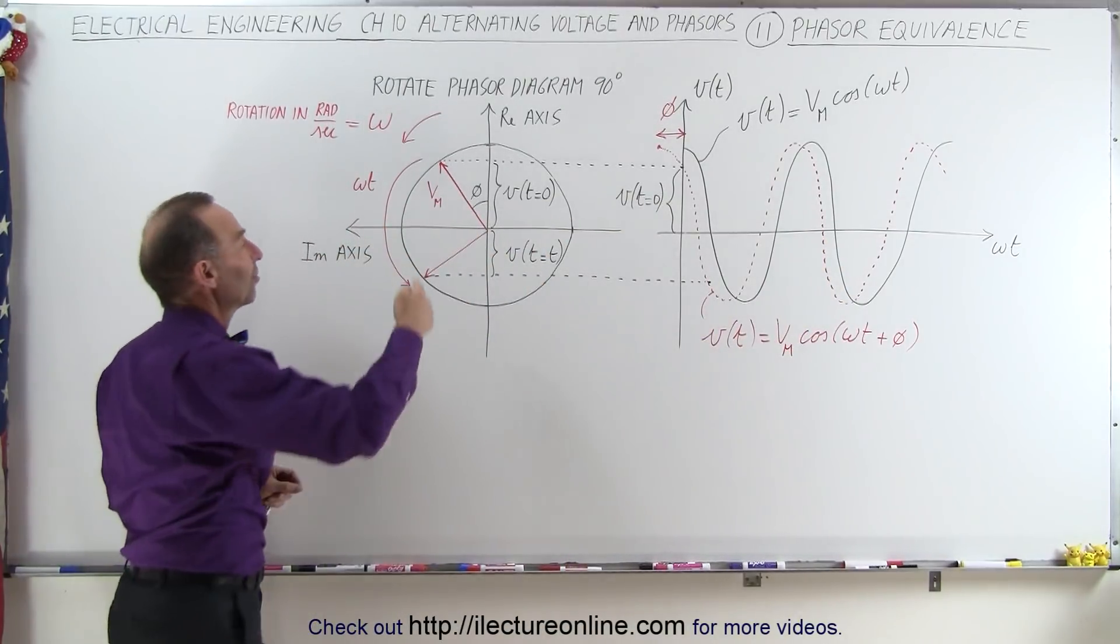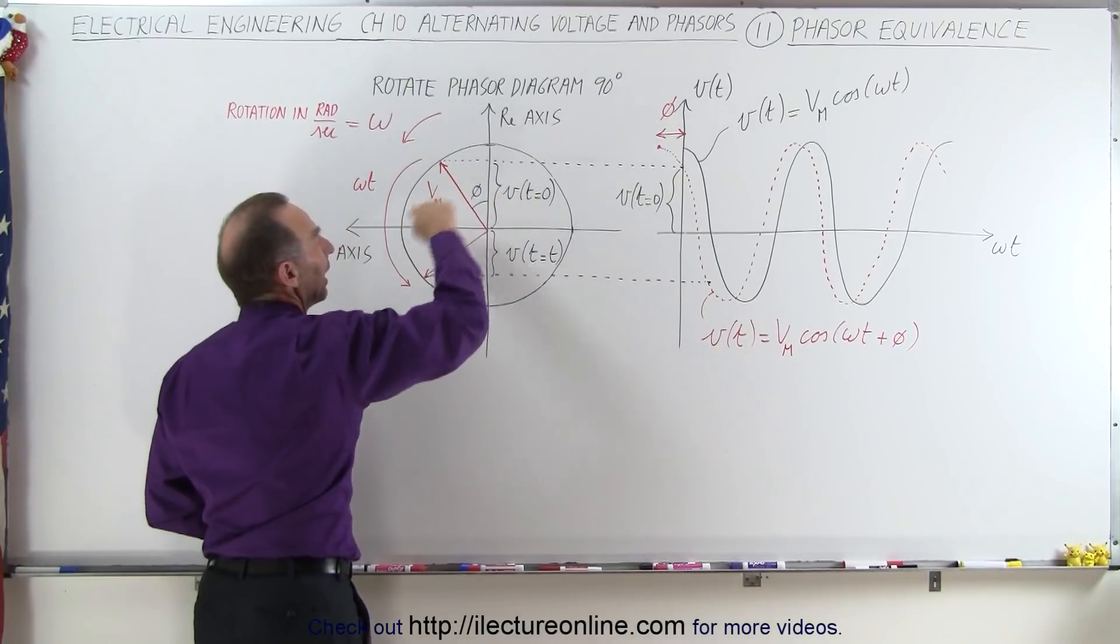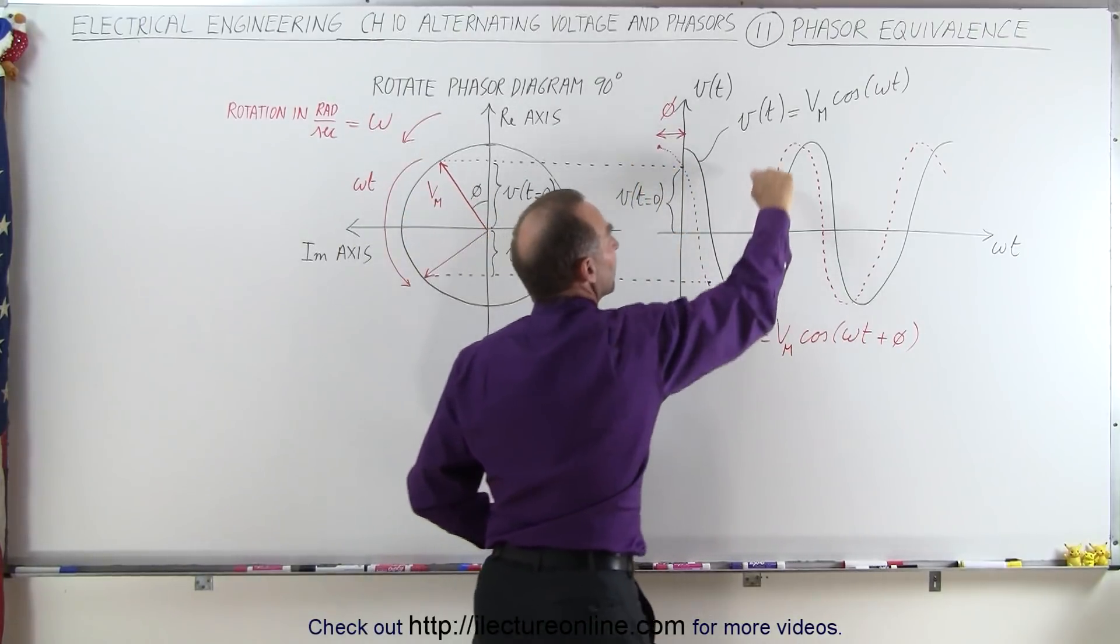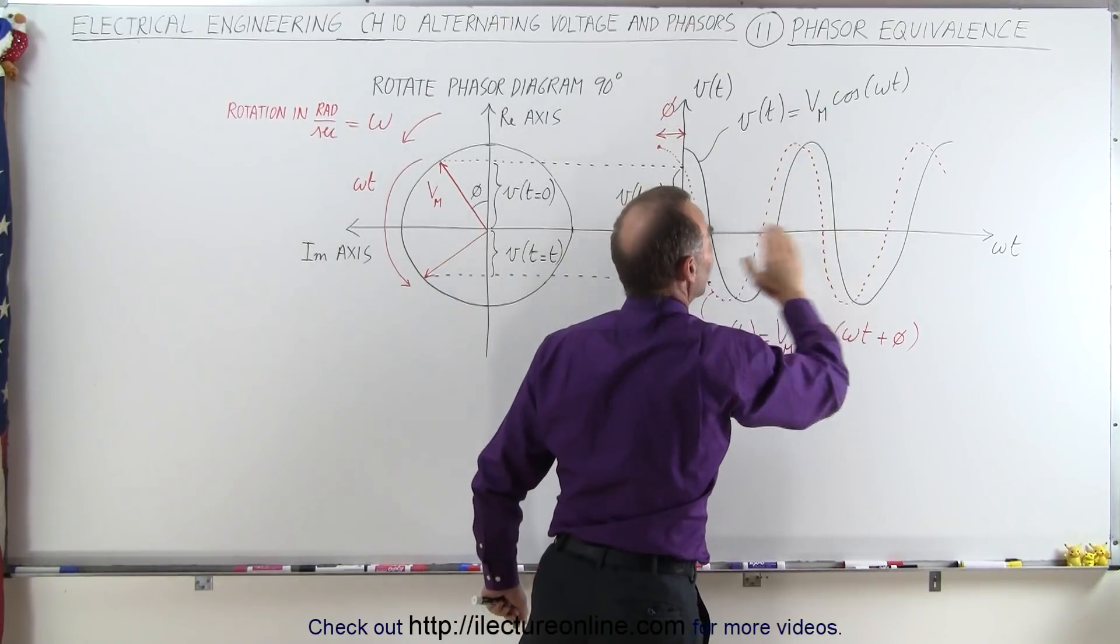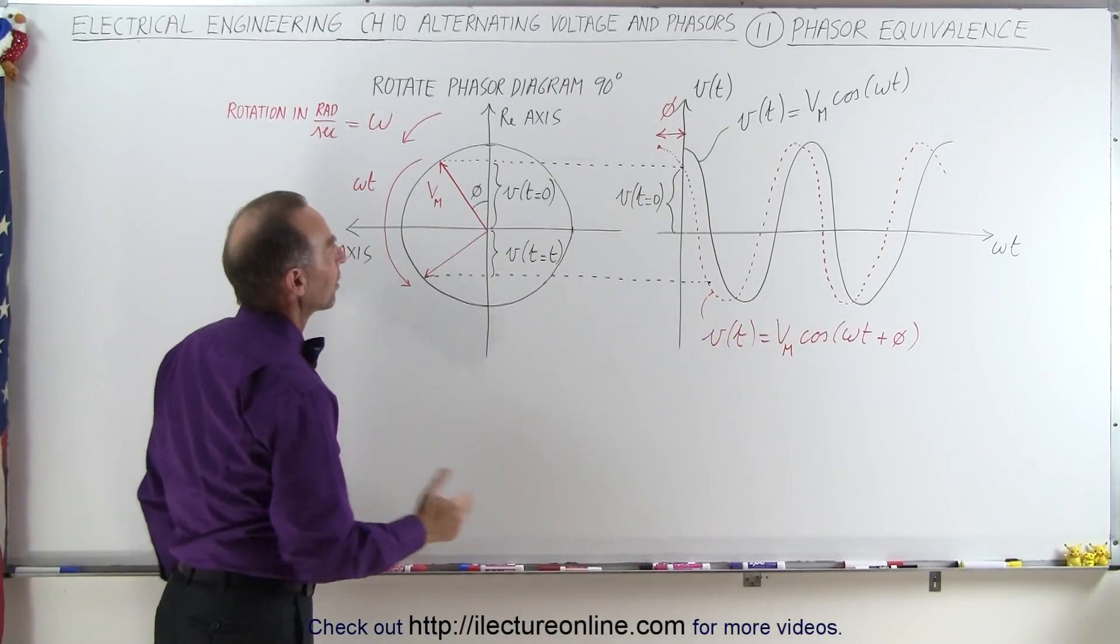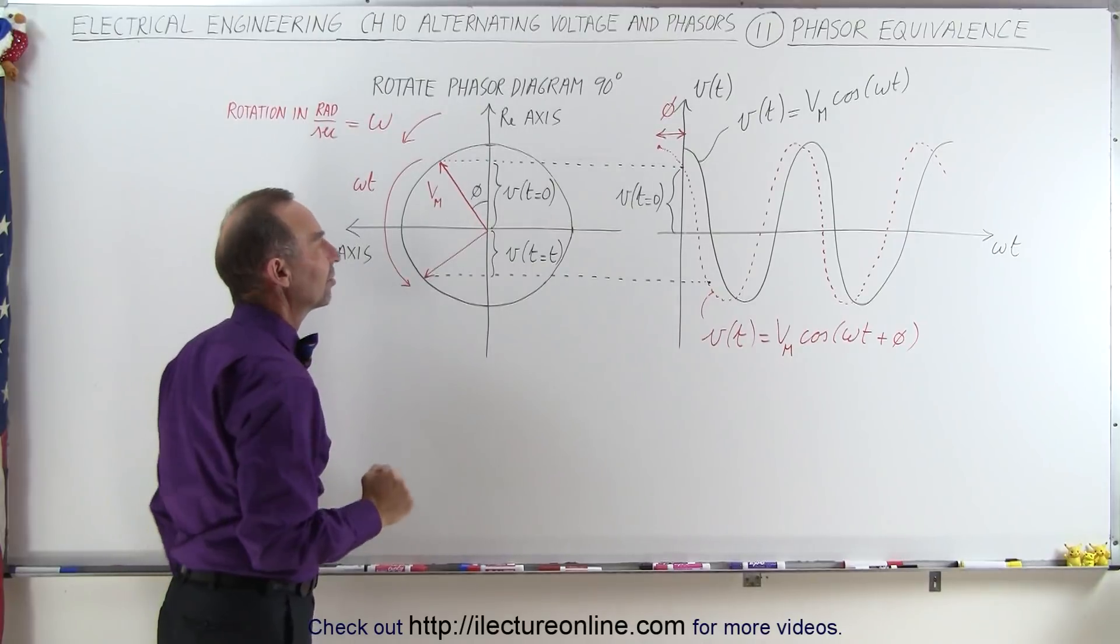So a phasor diagram simply shows that the phasor just keeps rotating around, and that represents the magnitude of the voltage as we go through time, just like we'd see on the sinusoidal diagram.